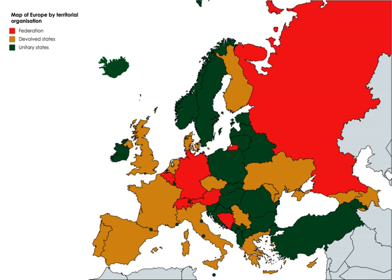Shortly after the 2011 Civil War in Libya, some people in Cyrenaica in the eastern region began to call for the new regime to be federal, with the traditional three regions of Libya being the constituent units. A group calling itself the Cyrenaican Transitional Council issued a declaration of autonomy on 6 March 2012. This move was rejected by the National Transitional Council in Tripoli.